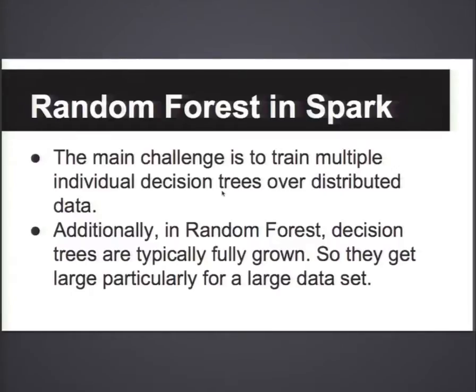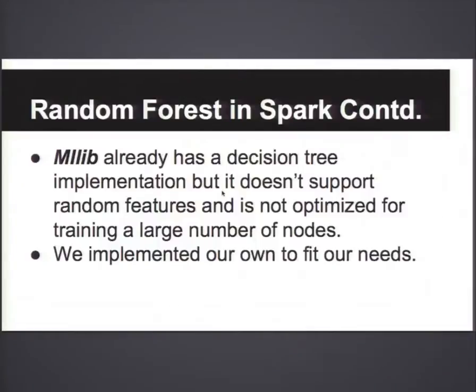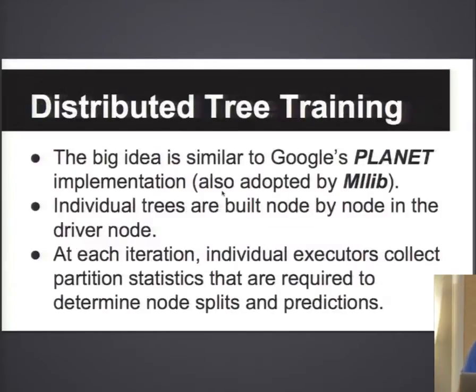The main challenge is actually the decision tree training, and you want to train many decision trees at the same time. In random forest, when you train decision trees, you typically do not prune them. The decision tree talk yesterday probably showed shallow trees, but in random forest, people typically train deeper trees. We thought about using the existing decision tree implementation, but the problem is it doesn't support random feature selection per node and isn't optimized for training really large trees, so we had to implement our own.